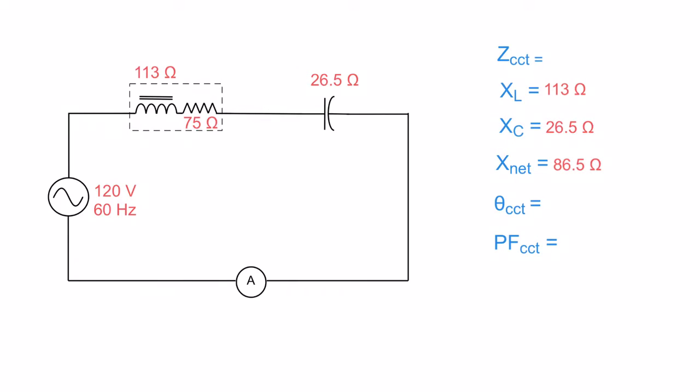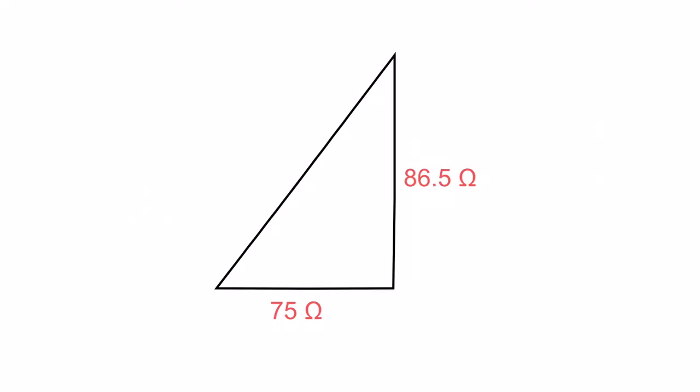Before we were using either our XL or our XC, depending on which circuit you're looking at. Now we're going to be using the X net because these guys are working against each other. So we have to use the X net. God bless the triangle. Here it is: 75 ohms on the bottom, resistive element always goes on the bottom. 86.5 ohms on the side, that is your net reactance. We're going to take this squared plus this squared equals this squared, and we get our overall impedance of 114.5 ohms. That is our total opposition to current flow in this circuit.